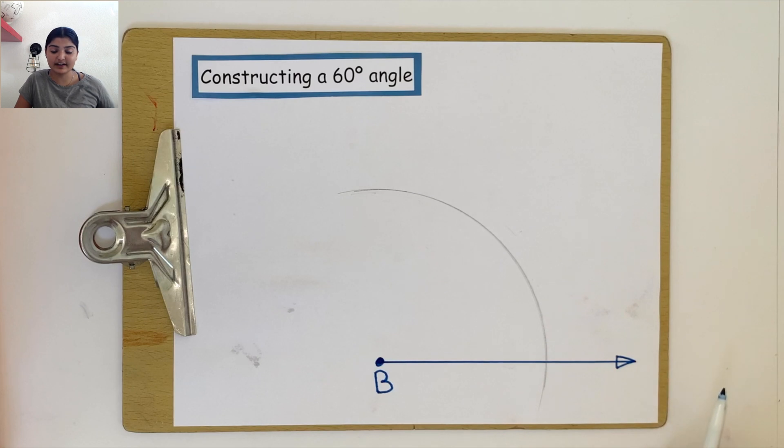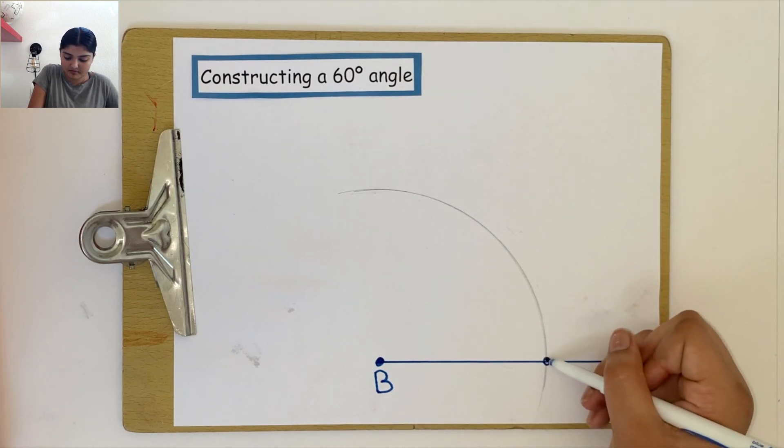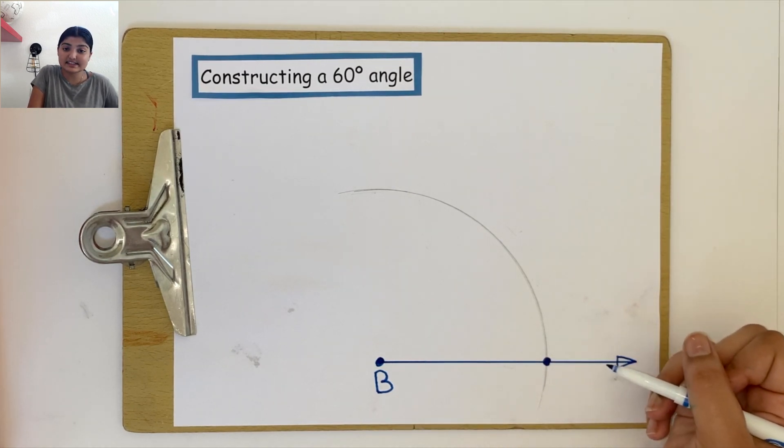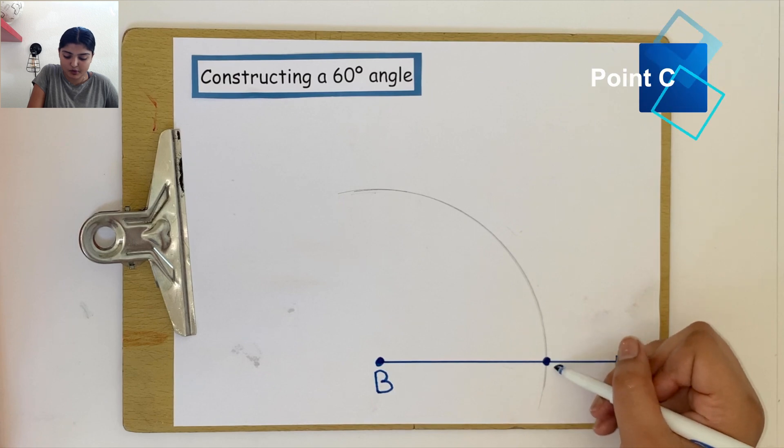We can make a point where this arc intersects our horizontal line and label this point C.